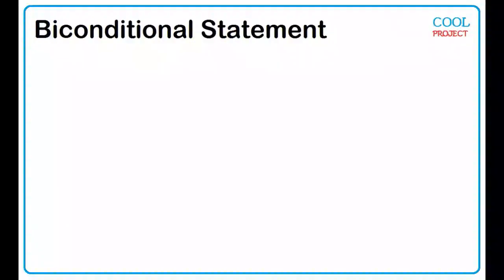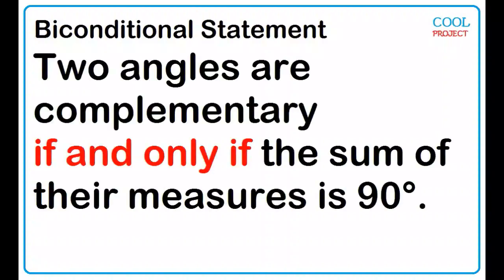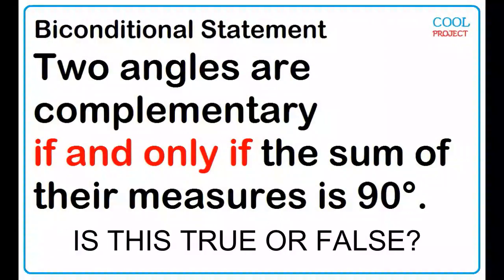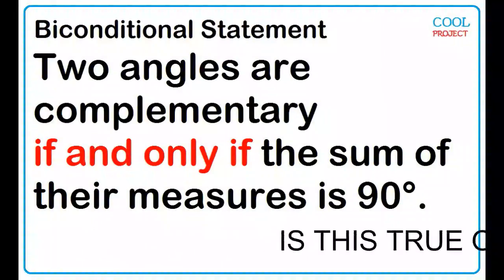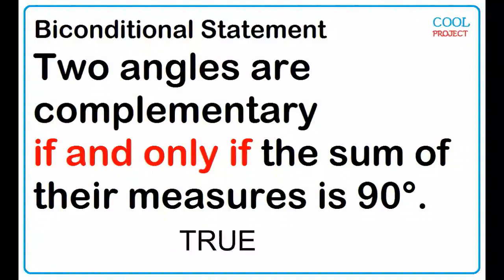A biconditional statement is a combination of a conditional statement and its converse, written in the if-and-only-if form. Two angles are complementary if and only if the sum of their measures is 90 degrees. A biconditional is true if both the conditionals are true. Is this true or false? True.